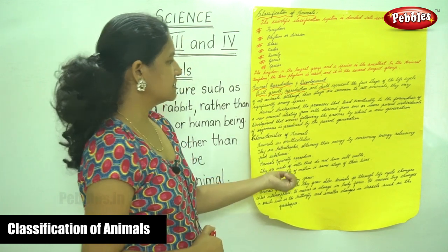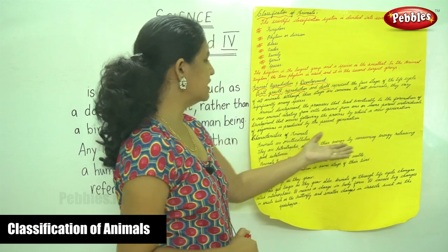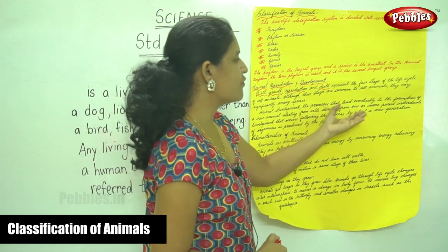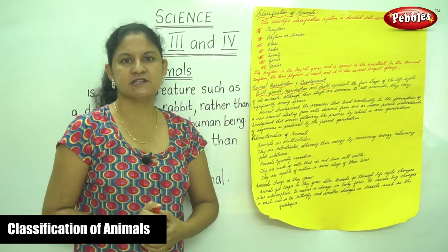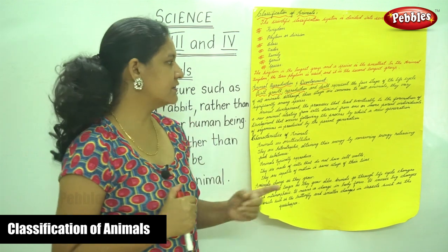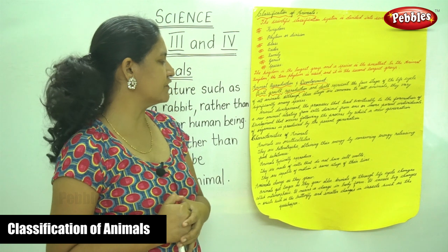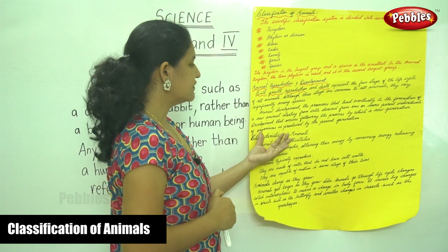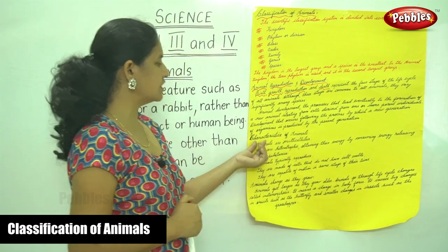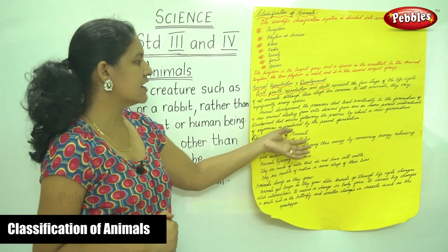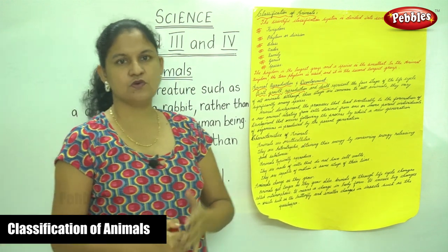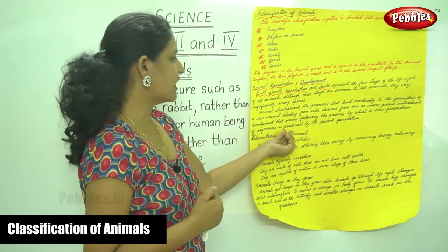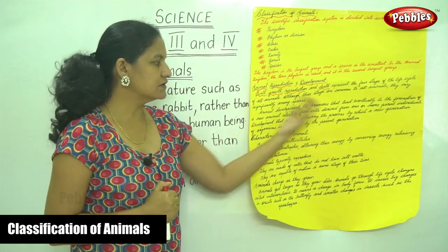Animal development refers to the processes that lead eventually to the formation of a new animal, starting from cells derived from one or more parent individuals. Development occurs following the process by which a new generation of organisms is produced by the parent generation.